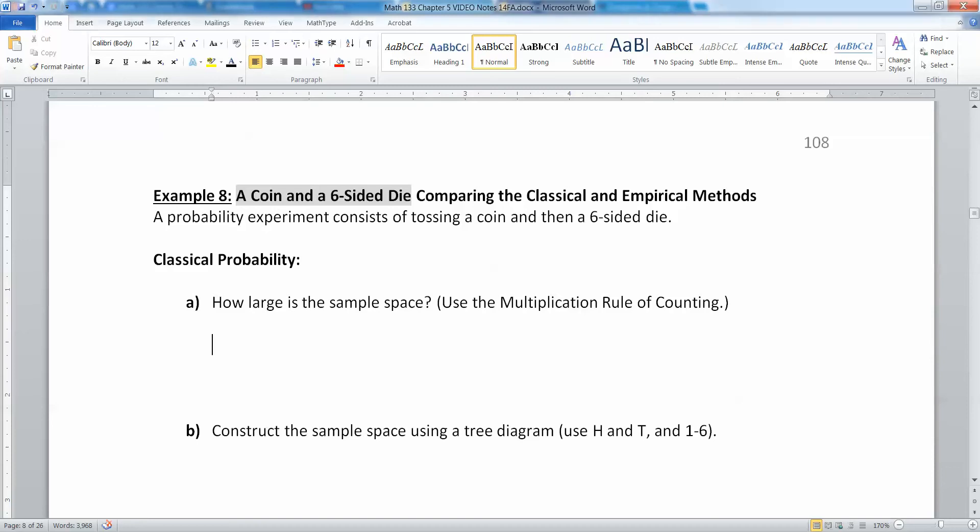So let's imagine a probability experiment where we are going to toss a coin and then a six-sided die. So if that's the case, then how large is the sample space? Well, that's not too bad to figure. It's two times six, which is 12, because you have two options for the coin and six options for the die. That makes 12.